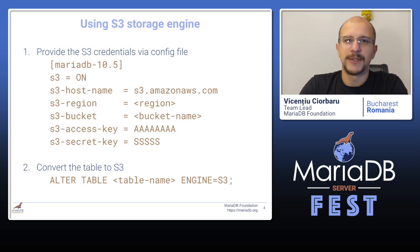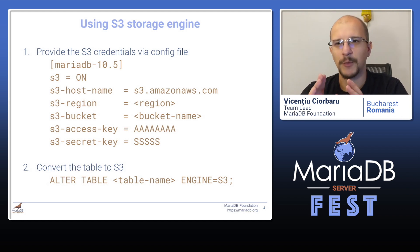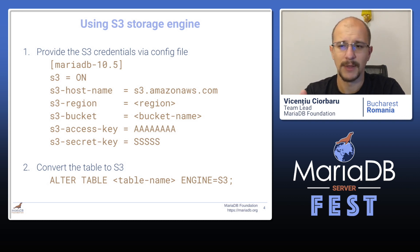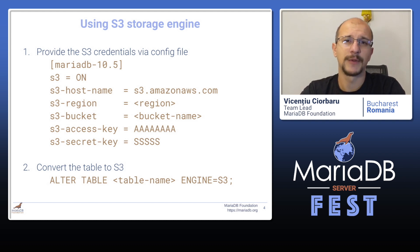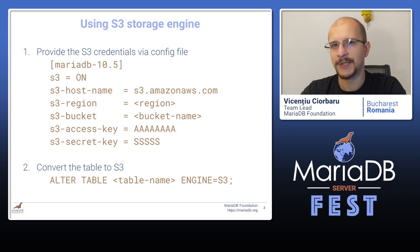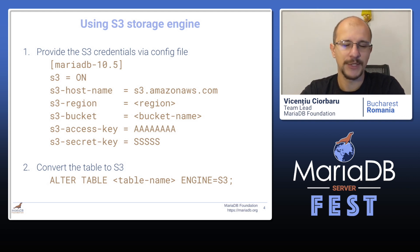Let's see how we can use the S3 storage engine. The goal when it was first designed was to make it really simple to use. All you need to do is configure where the S3 provider is: provide the hostname, the S3 region in case it's cloud-based with multiple regions, the bucket name, and finally the access key and secret key credentials that the S3 provider supplies for you. Once you start up MariaDB with these settings and the plugin enabled, all you have to do is pick whatever table needs to be archived and change the storage engine to S3. Changing it to S3 means that all the data from your production table moves to the archive.